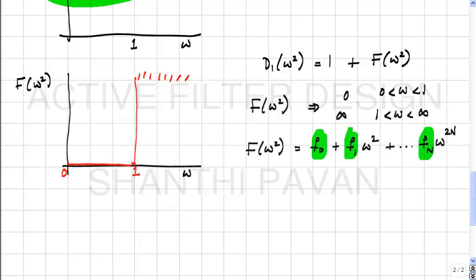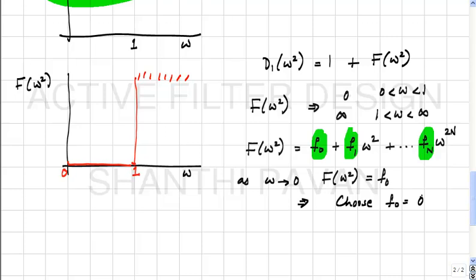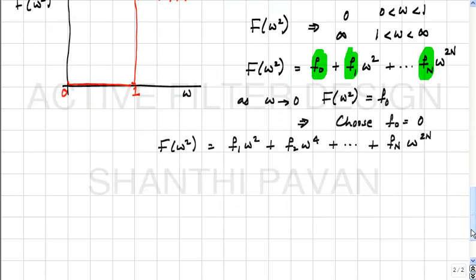For very small ω — much less than 1 — f(ω²) ≈ f₀. But we want f(ω²) to be 0, so the good choice is f₀ = 0. With f₀ = 0, f(ω²) = f₁ω² + f₂ω⁴ + ... + fₙω²ⁿ. At low frequencies, the behavior is dominated by the leading term f₁ω². We want this to behave like 0, so we choose f₁ = 0 as well. Continuing this argument, f₂ = 0, f₃ = 0, ..., all the way up to fₙ₋₁ = 0.